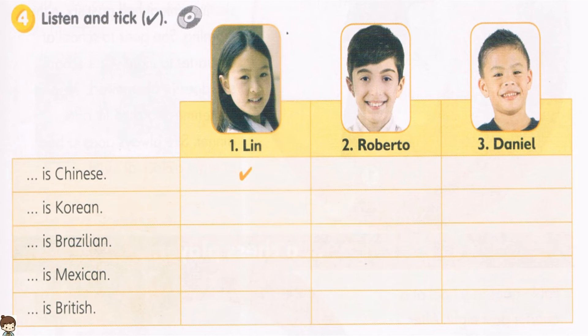3. Hey, Steve. Who's that? That's Daniel. He and his family are new here. Really? Where is he from? He's from the UK.